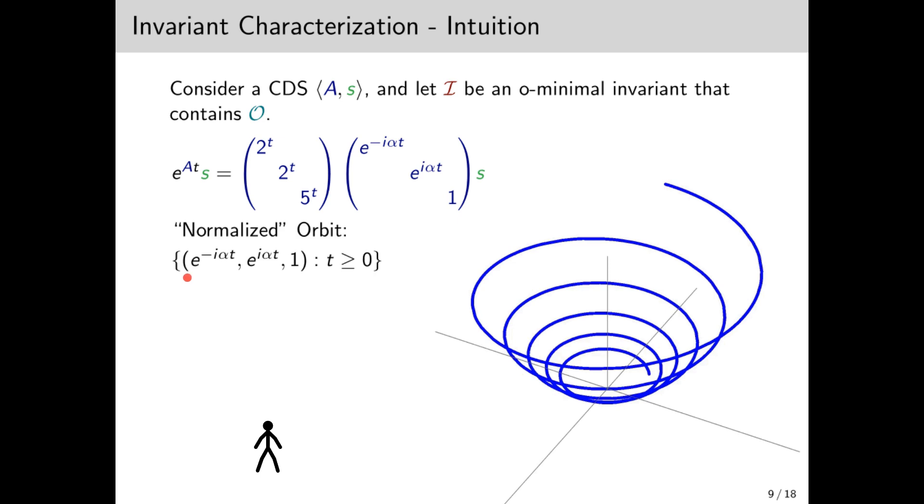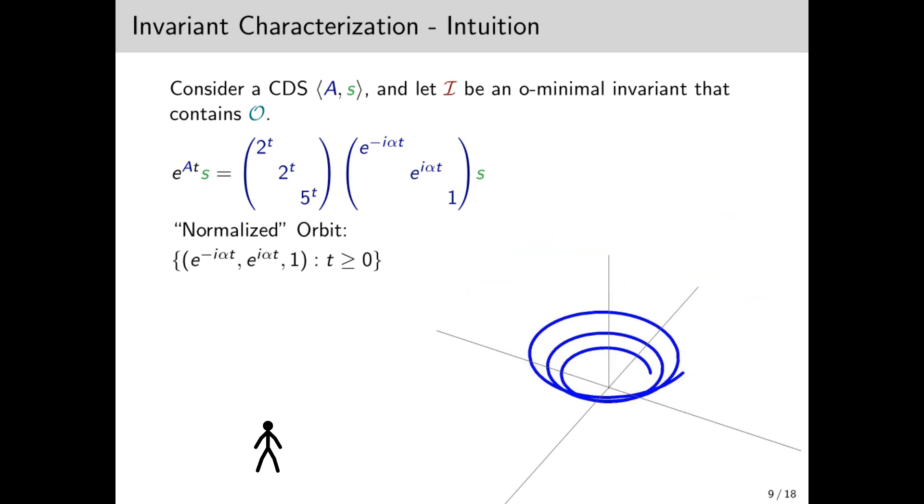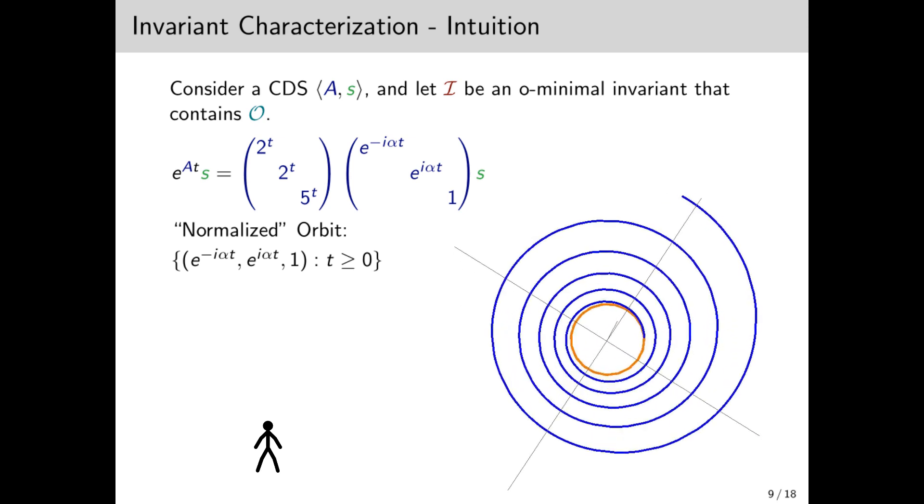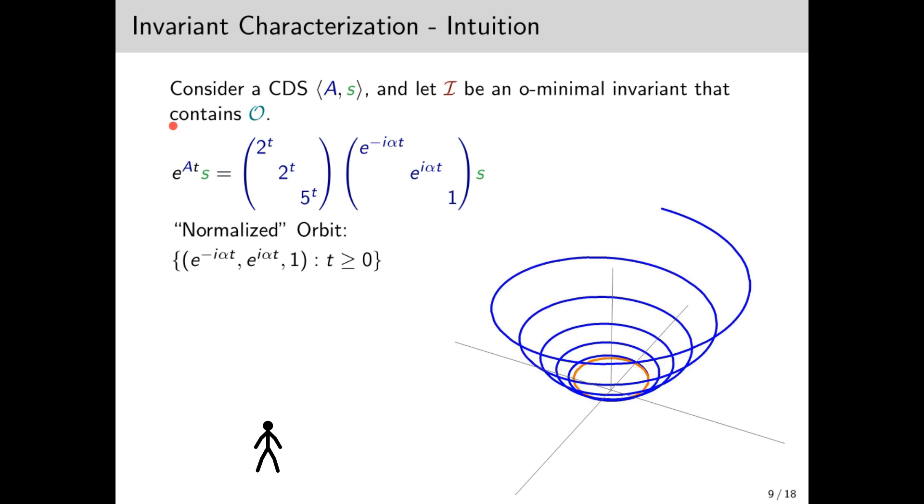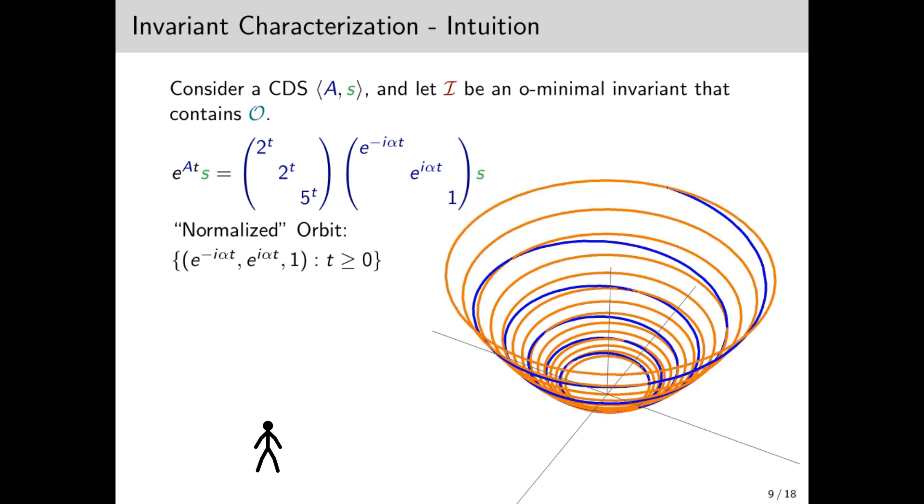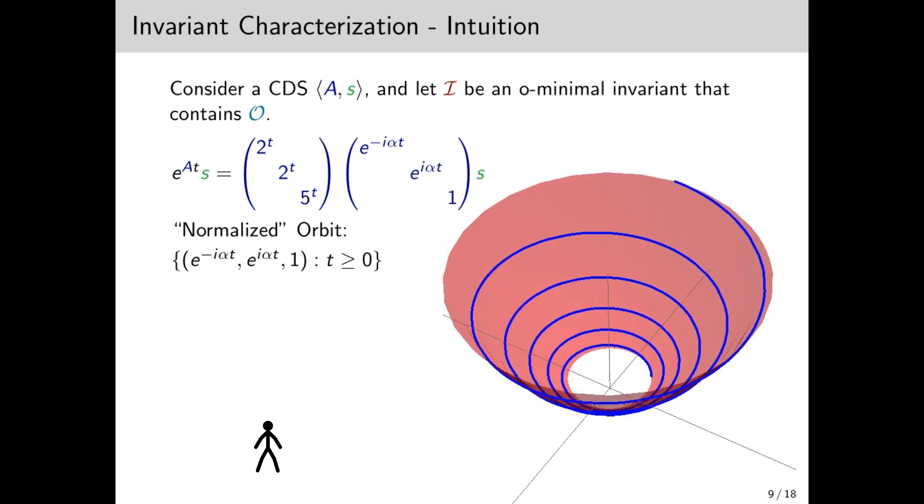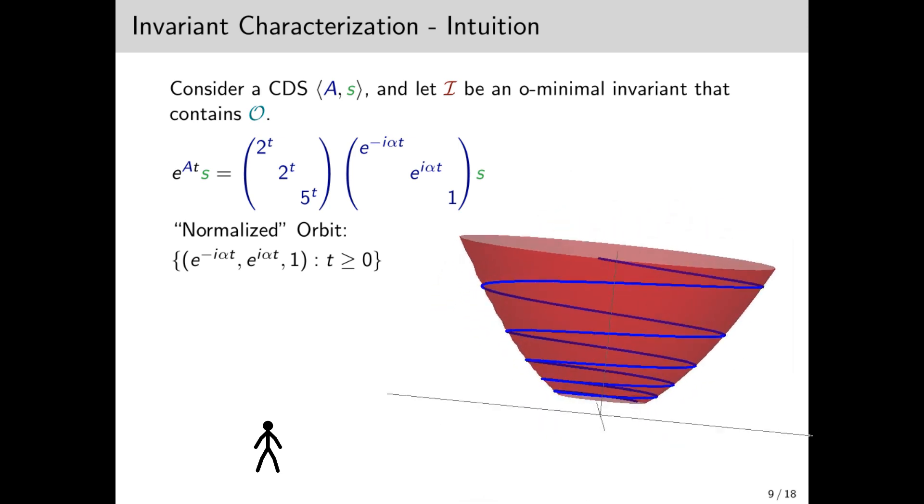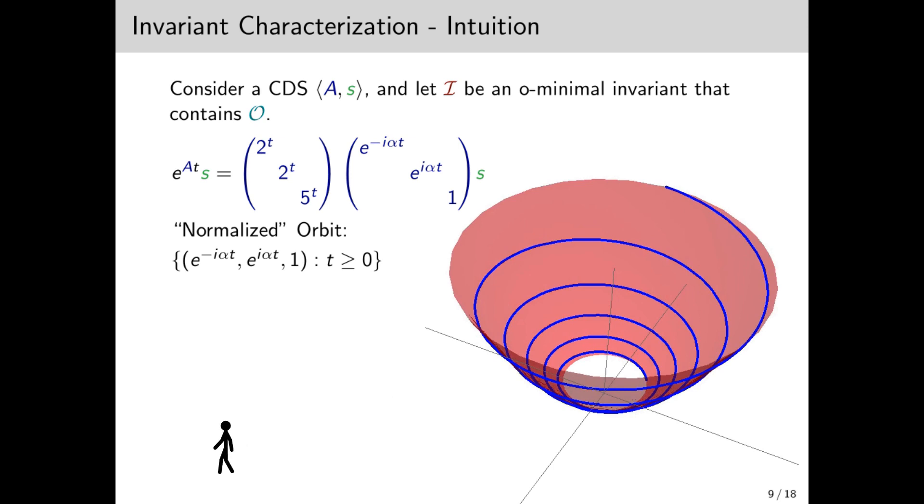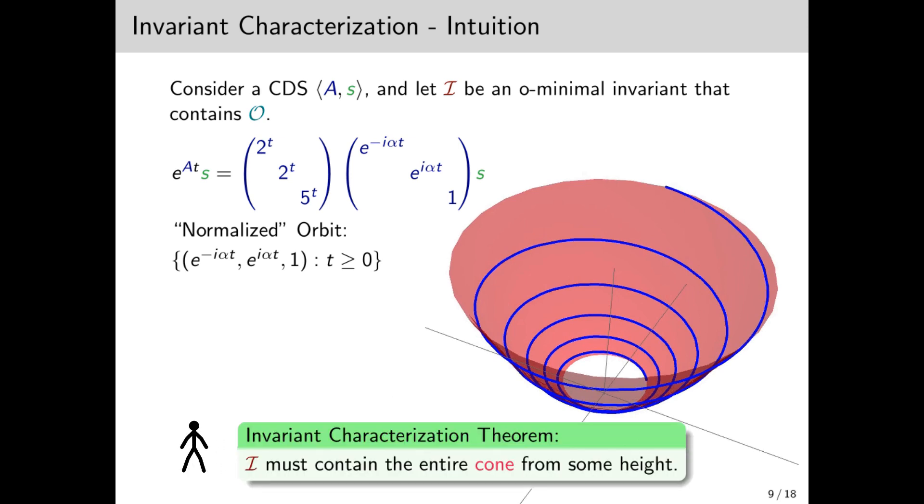Now let's focus on the normalized orbit, which is the trajectory if we ignore the moduli, starting from the initial point. When we run through the orbit, it behaves like this. Now, morally, if an invariant is O-minimal and contains the orbit, then since it is nice, it must contain the entire normalized orbit. But this is true for every point we start with on the orbit, not just the initial point. So I should actually contain all of these circles as we climb up the orbit. Meaning that it should actually contain this entire bowl thingy, which we call a trajectory cone. Note that it's not a cone in the geometrical sense. Well, this is almost true. What we actually prove is that I must contain the entire cone from some height, so it can leave out some bounded bottom.